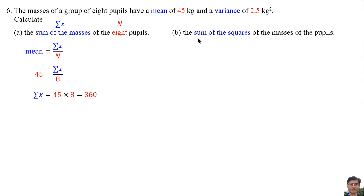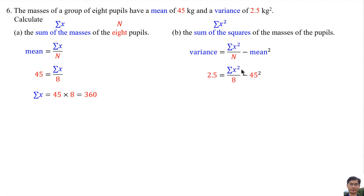For part B, calculate the sum of the squares of the masses of the pupils. The sum of squares is Σx². Using the variance formula: variance equals Σx² divided by n minus the mean squared. Variance is 2.5, n is 8, and mean is 45. So Σx² equals (2.5 plus 45²) times 8, which equals 16,220.